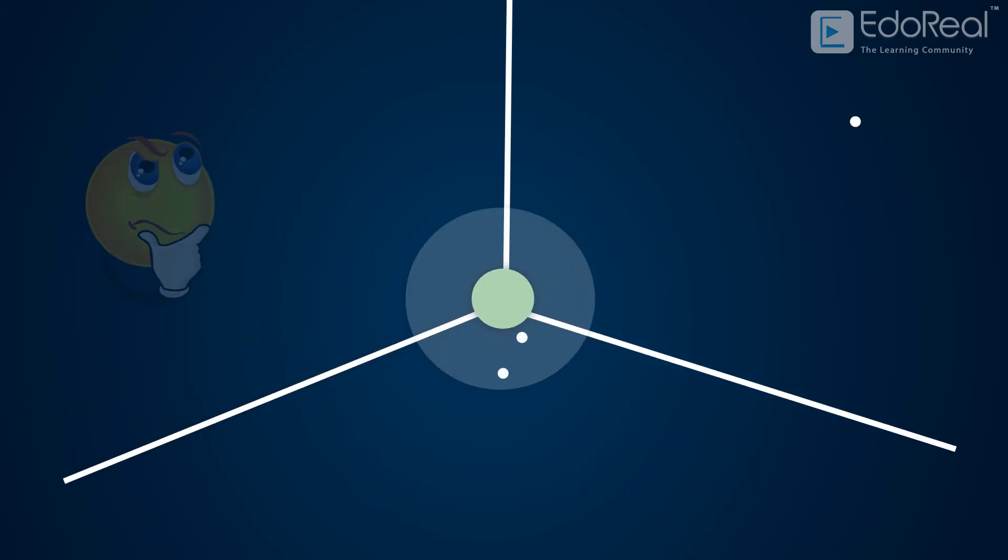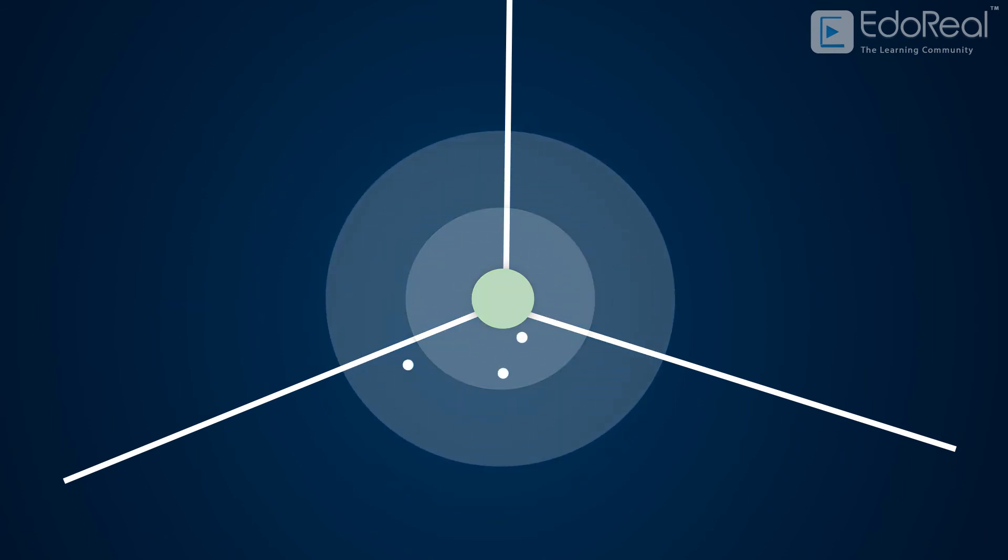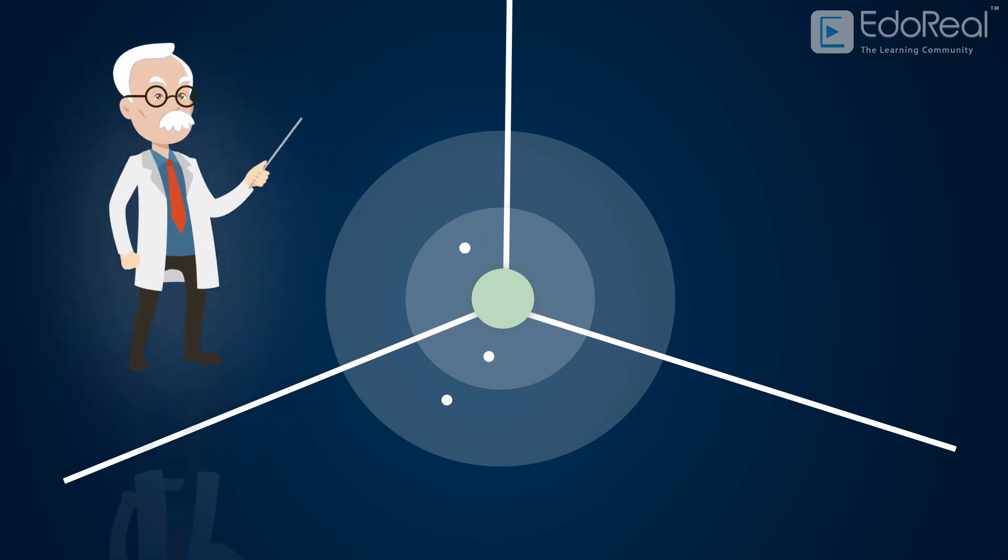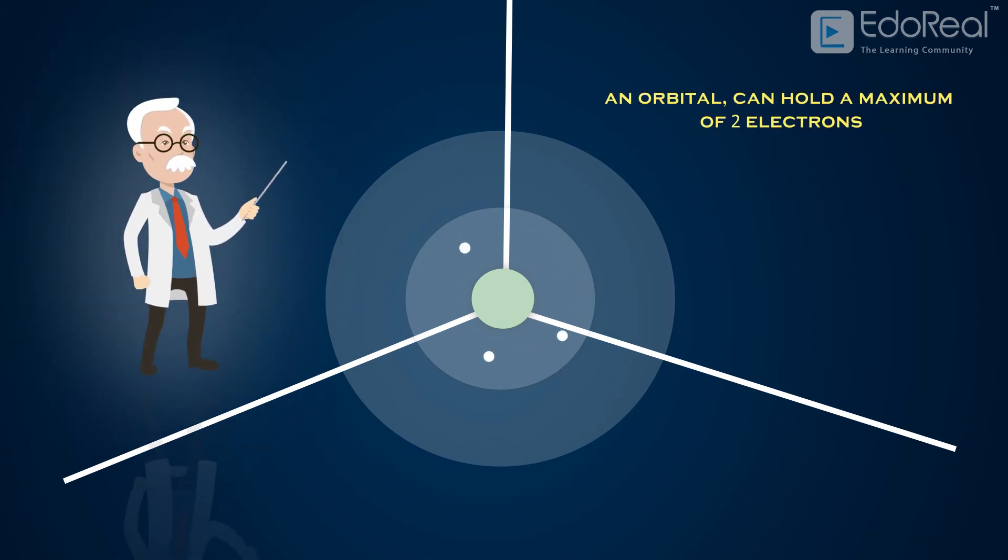What if a third electron comes? The probability of finding the third electron covers more space than the first two electrons, but with the same spherical shape. So, as the third electron covers different space, scientists concluded that an orbital can hold a maximum of two electrons.